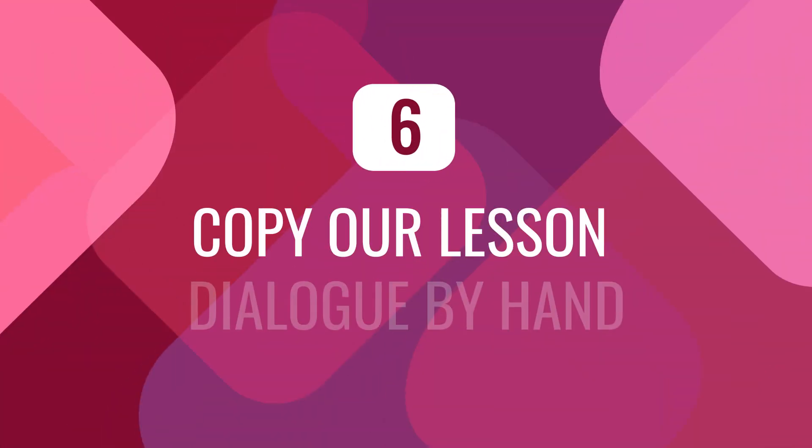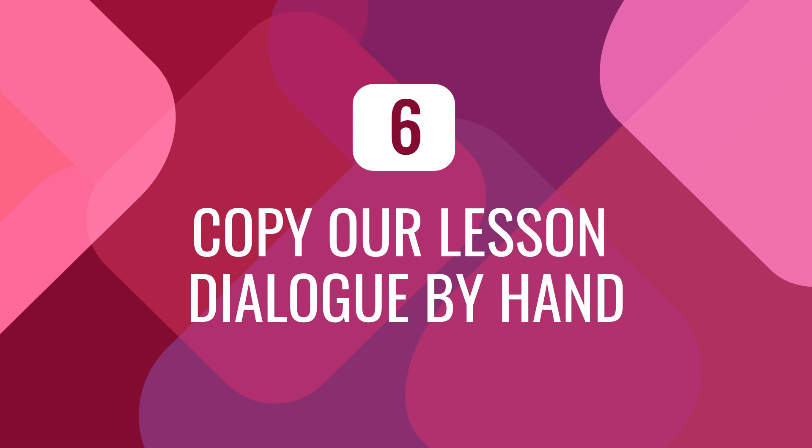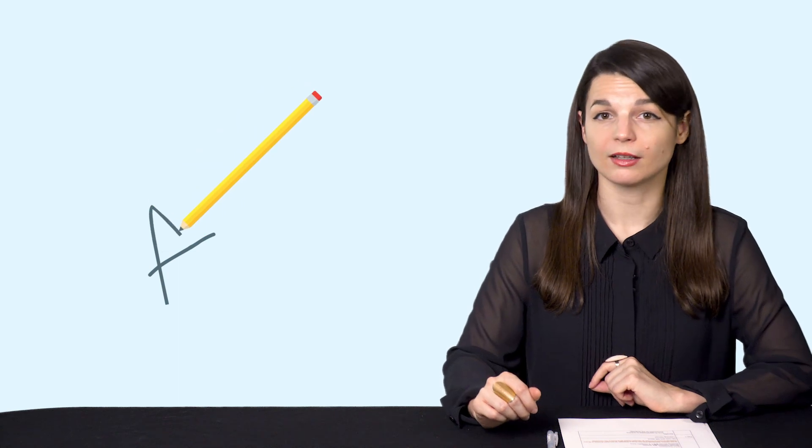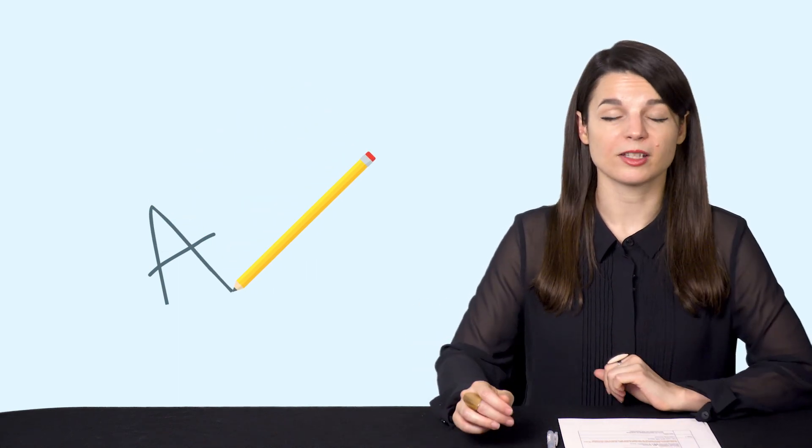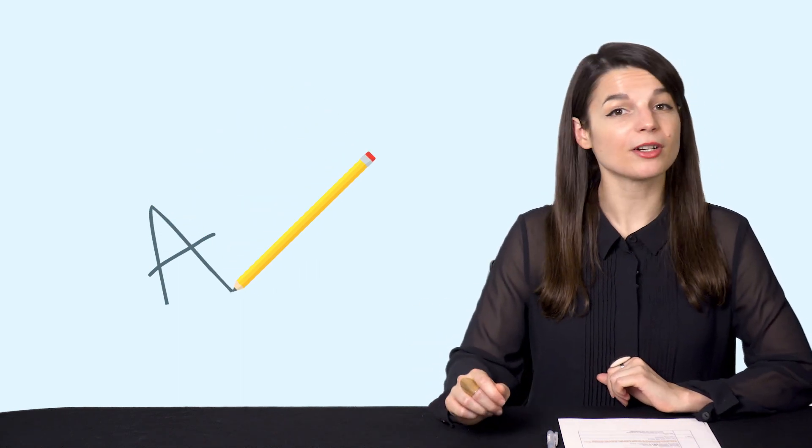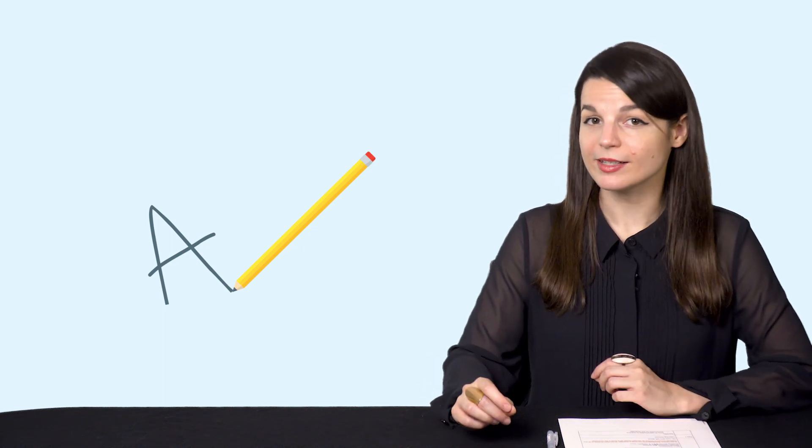Number six. For writing, try and copy out our lesson dialogue by hand. The point here is to see if you can write smoothly or not, as a way of assessing your writing. You can also do this with any textbook. You can also take a picture of your writing and send it to your Premium Plus teacher for feedback.